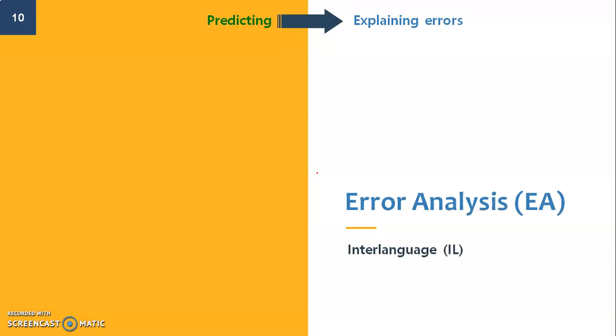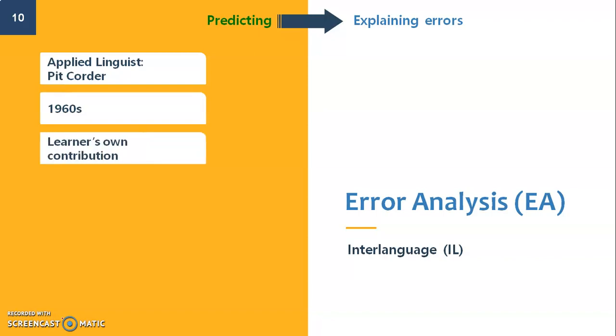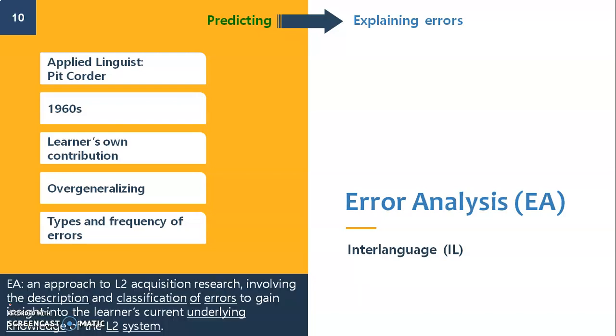Error analysis approach, which bases its hypotheses on the interlanguage idea, which I will explain later, was suggested by applied linguist Pit Corder in the 1960s, so it was after the contrastive analysis. It depended on a learner's own contribution to errors. It's not only about areas of difficulty and similarities. Learners had this unique contribution to the mistakes they do. There is the concept of overgeneralizing and we also have to be careful about types and frequency of errors that happen in second language learning. Therefore, the error analysis approach to L2 acquisition involves describing, classifying errors, that is collecting errors and then describing them and classifying them in order to understand why the learner is doing these errors and how is the system, the underlying knowledge, the system of the learner functioning.